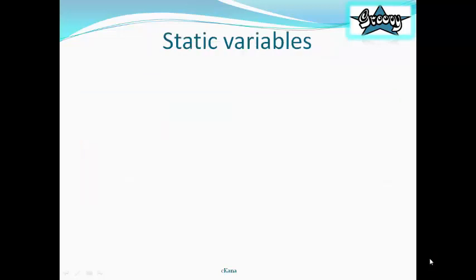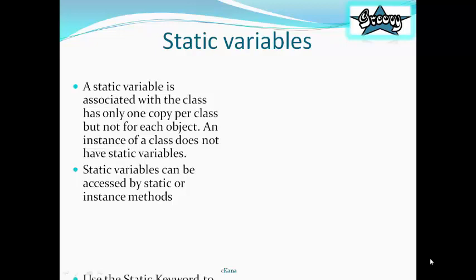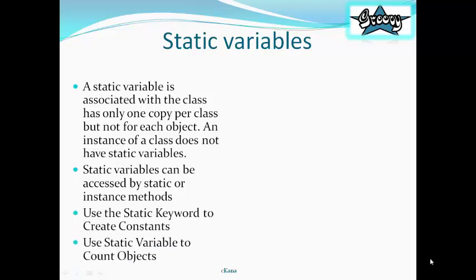Let's study the static variables now. A static variable is associated with the class and has only one copy per class and not for each object. An instance of a class does not have static variables. In short, a static variable is one that is associated with the class and not the object of the class. Static variables can be accessed by static or instance methods, both.